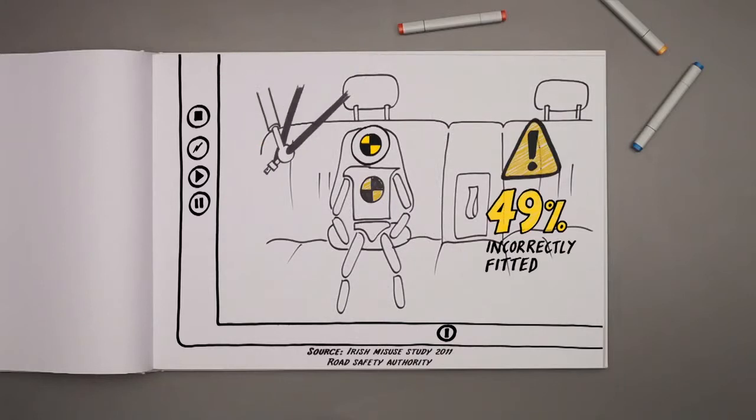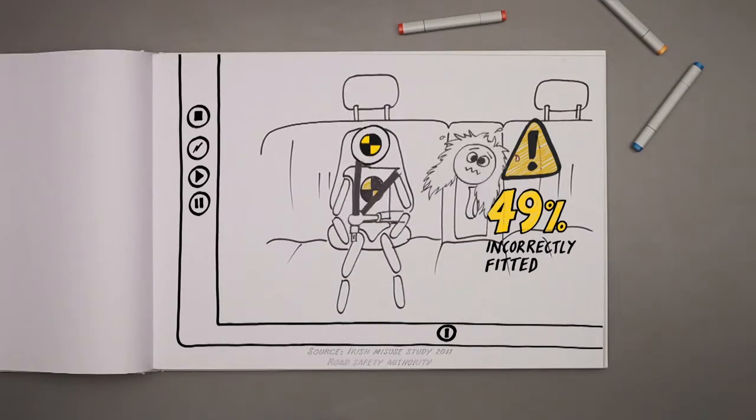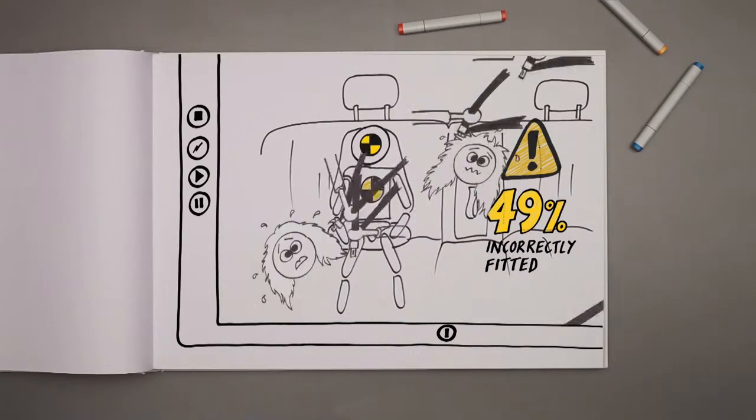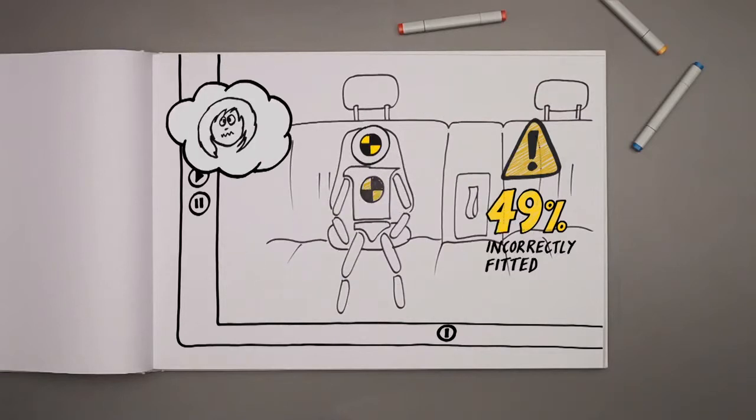Then we found that nearly half, 49% of seatbelts used to secure child seats may be fitted incorrectly. They're often twisted, too high, or fitted around the seat, not the child.